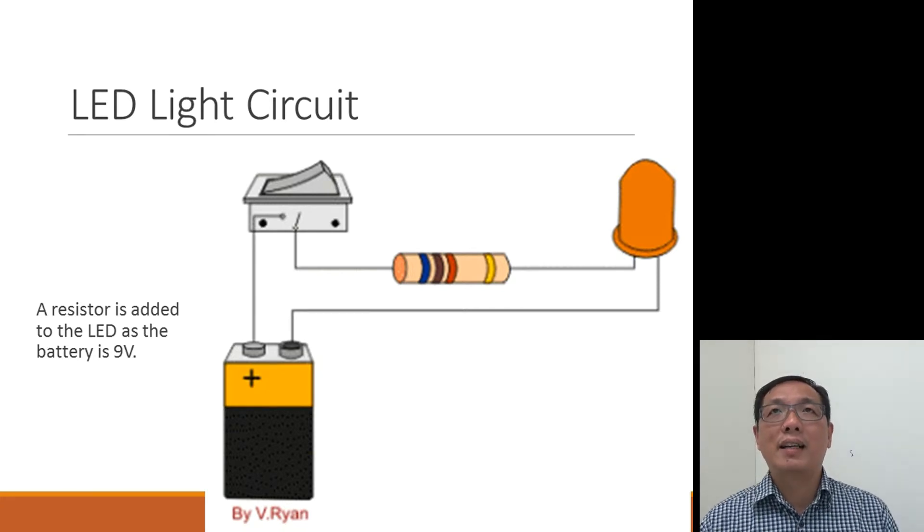Now you look at this circuit, a simple light LED circuit. Because the battery is 9 volt, therefore you need a resistor in series with the LED.